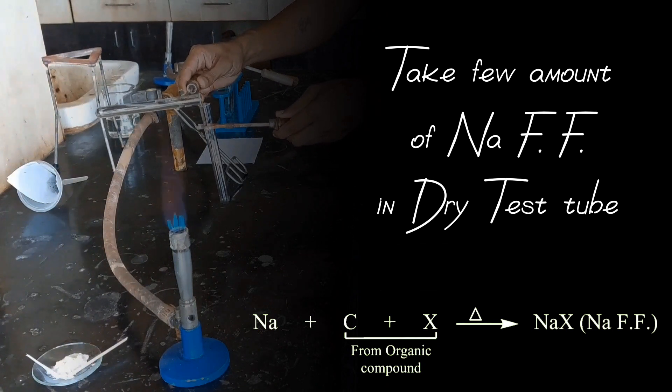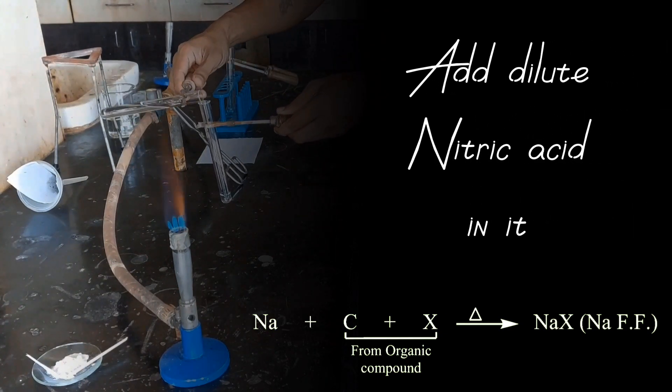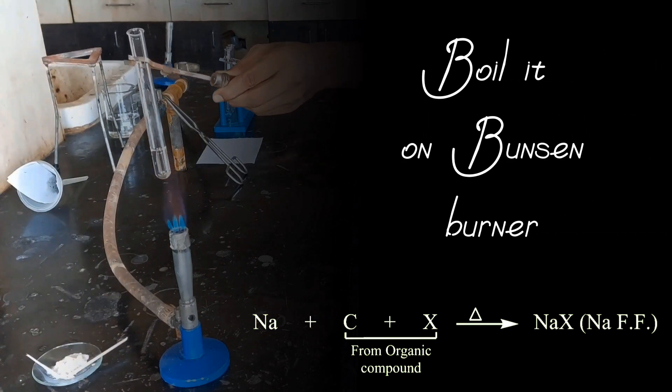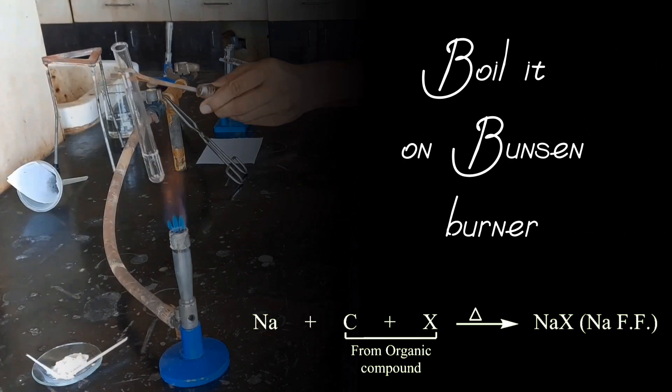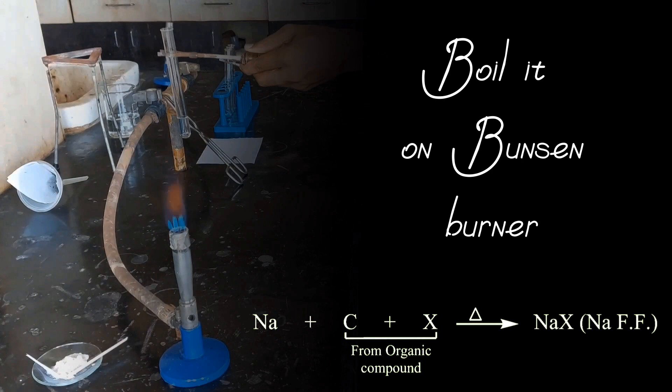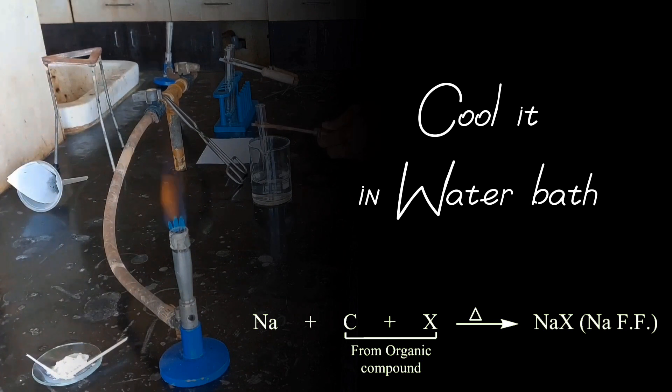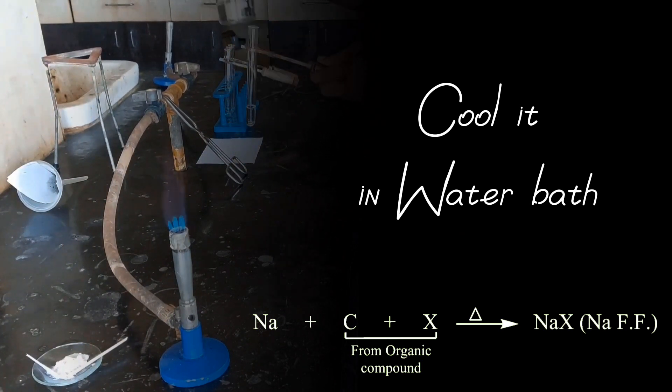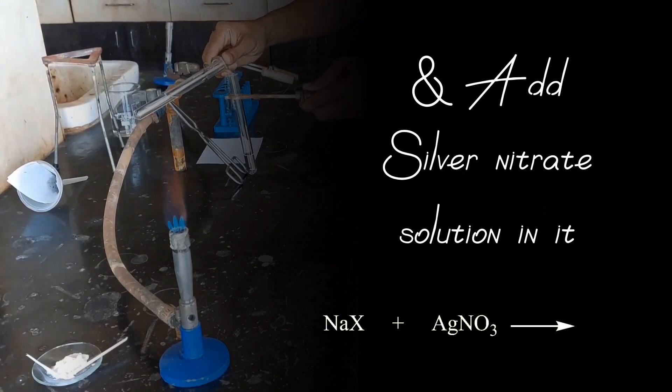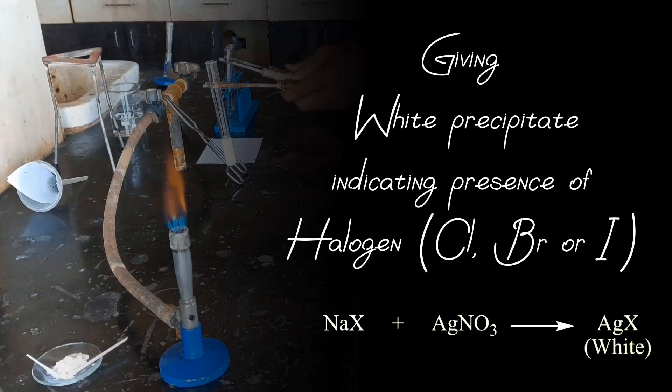Now let us do detection of Halogen. Take few amount of sodium fusion filtrate in dry test tube. Add dilute nitric acid in it. Boil it on Bunsen burner and add silver nitrate solution in it, giving white precipitate indicating presence of Halogen.